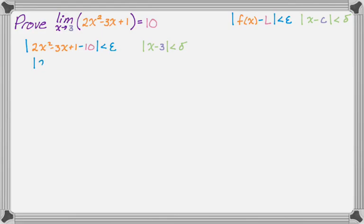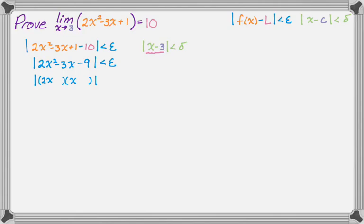At this point it's just algebra — combining terms. Now I need to factor. Keep in mind we need x - 3 to show up to do the proof. So when you factor this quadratic, x - 3 should definitely be a factor — and it is if we work it out. Now what we're going to do is break this into two separate absolute values using the property that the absolute value of a product is the product of the absolute values.